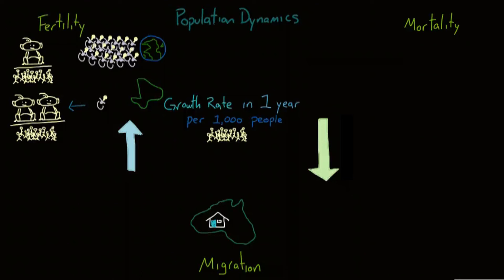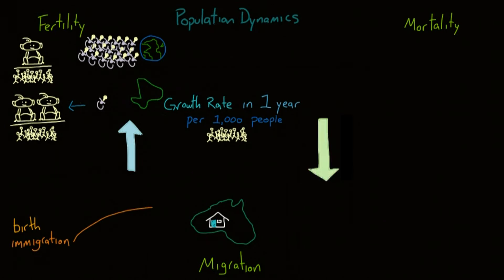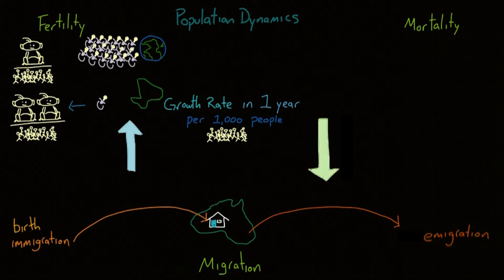There are two factors that will increase the population of a country, births and immigrations. Immigration is the movement of a person into a country. Conversely, movement out of a country is called emigration, but that decreases the population, so I'll get to that in a minute. As we've already seen, birth rate is the number of births per 1,000 people.